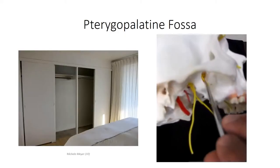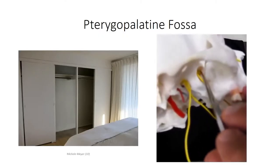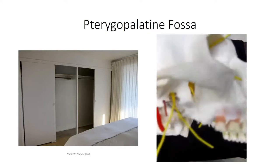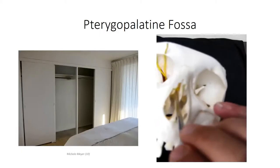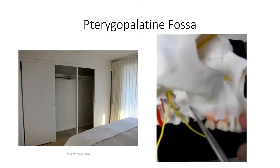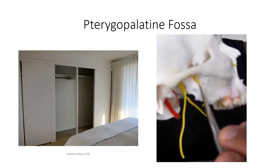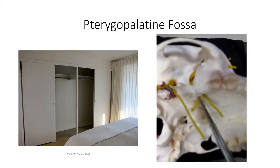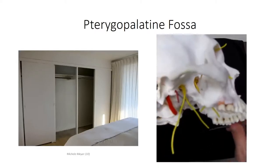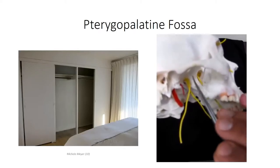The medial wall represents the back of the closet and is formed by the perpendicular plates of the palatine bone. Here we find the sphenopalatine foramen, an opening which allows for the passage of neurovascular structures into the nasal cavity. The floor of the pterygopalatine fossa is formed by the pyramidal processes of the palatine bone. It communicates with the oral cavity through greater and lesser palatine canals. The lateral margin is the opening into the closet, which allows communication with the much larger infratemporal fossa.